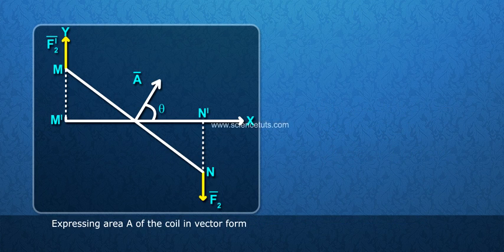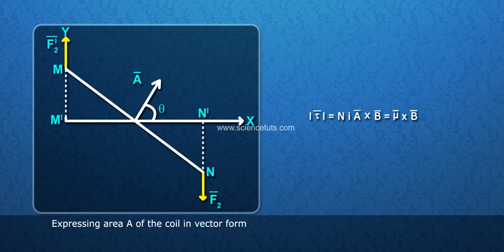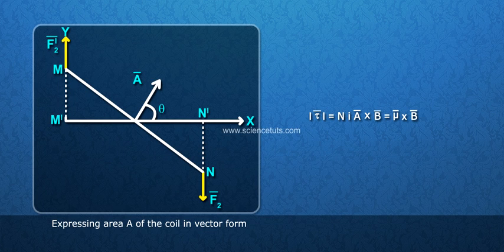Expressing area A of the coil in vector form, modulus of tau bar equals to NI A bar cross B bar equals to mu bar cross B bar.